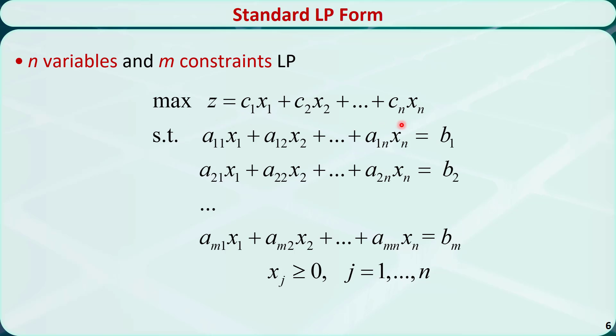For each constraint, the left-hand side is equal to the right-hand side. All the variables are greater than or equal to 0.